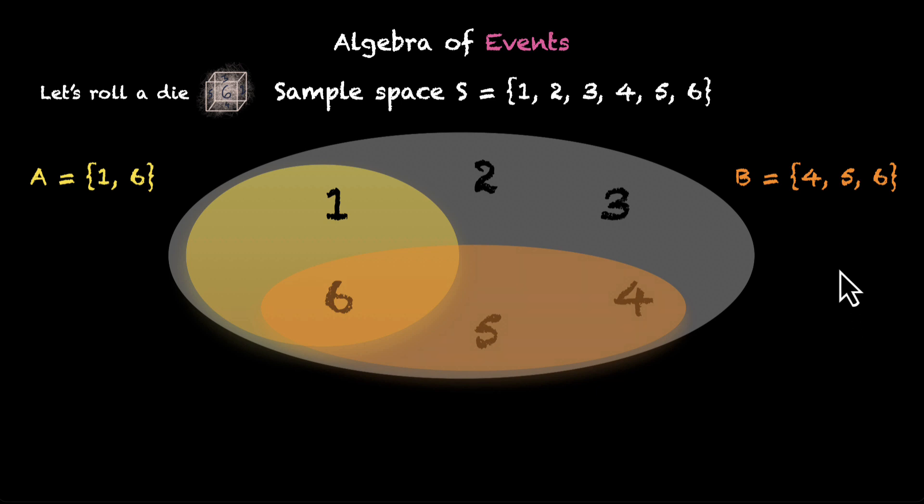Now, you can already see a bunch of interesting things happening. Numbers 2 and 3 are not part of A or B. 6 is part of both A and B. 1 is part of A, but it's not part of B. Now, you might be surprised, but whatever we just did in the last few seconds, that's what we call the algebra of events.